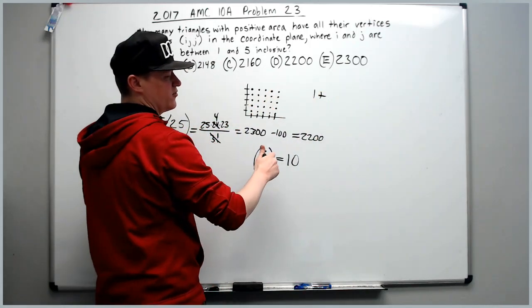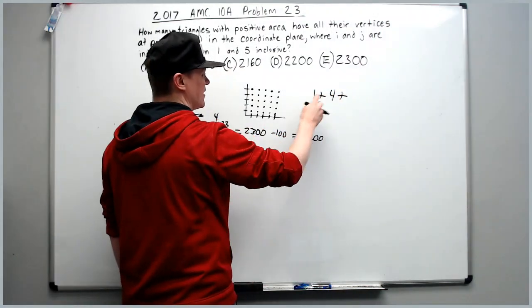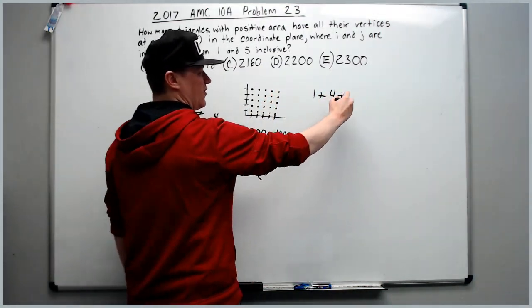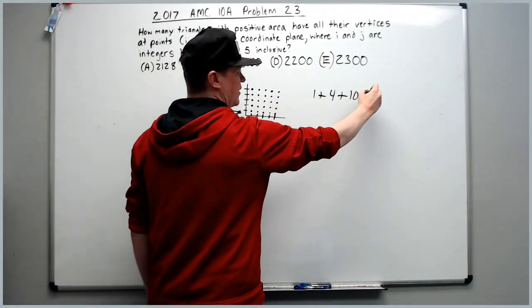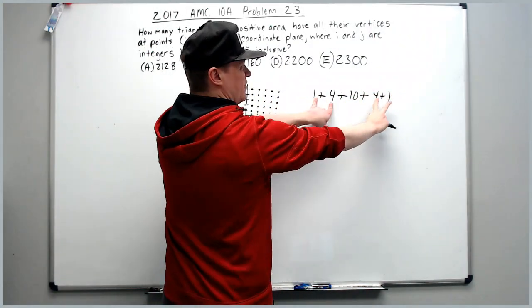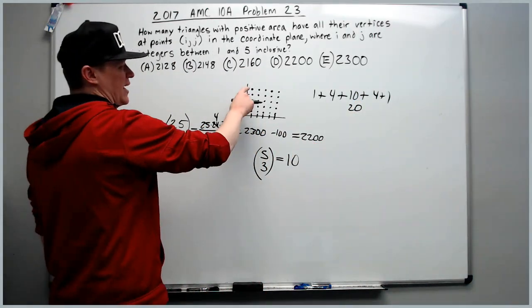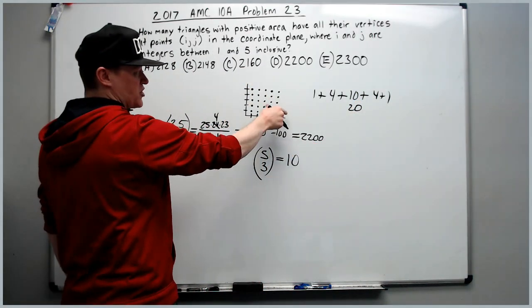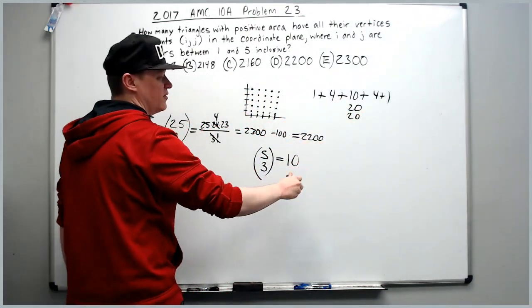The 5 points is, again, 5 choose 3. That's 10. You'll get the same 4 and 3 going this way. 5 and 5 is 10 plus 10 is 20. Okay, that's just going this direction. What about this direction? That's another 20. Total of 40.